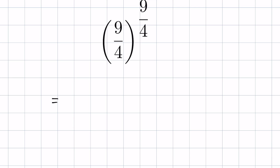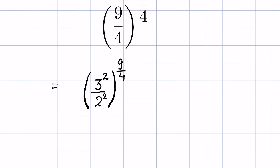We can write 9 as 3 raised to the power 2, and 4 as 2 raised to the power 2, then the whole raised to the power of 9 upon 4. Now we know that a raised to the power m upon b raised to the power m can be written as (a upon b) whole raised to the power of m.